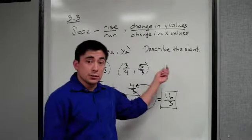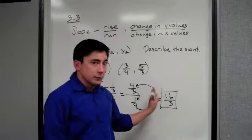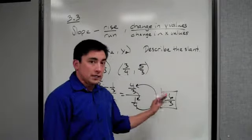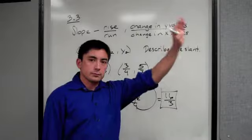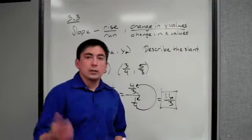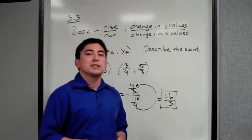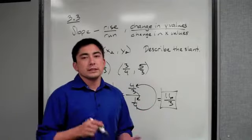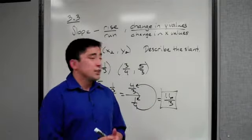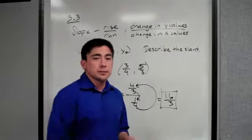If it asks you to describe it, since it's positive, even though it's a fraction, since it's a positive number it's going up into the right. Good luck with that. That is how you find slope between two points, and I'm sure you guys should do just fine. Good luck.